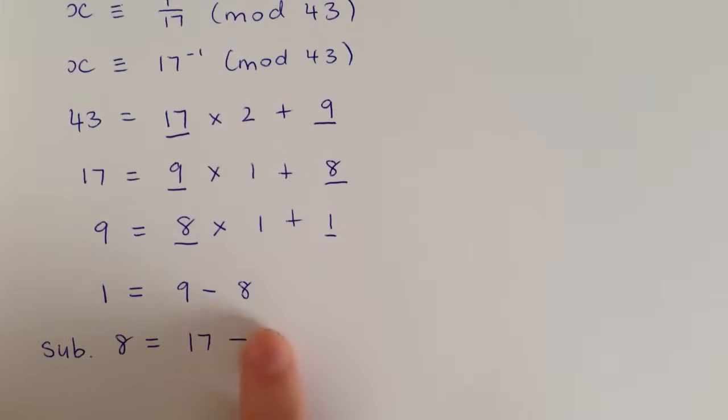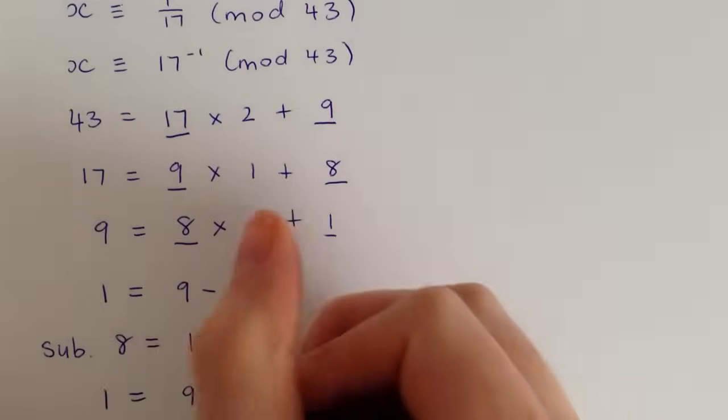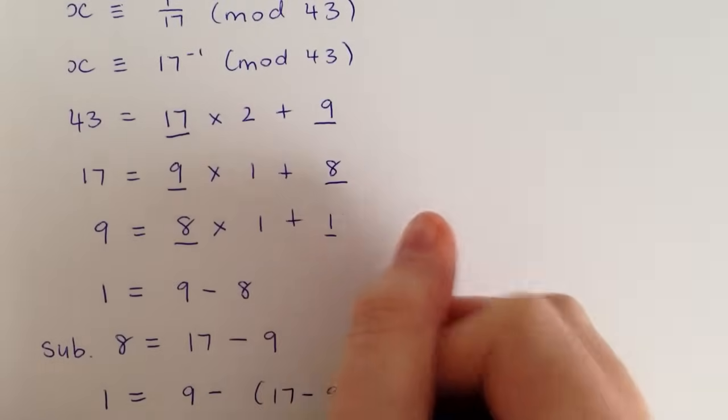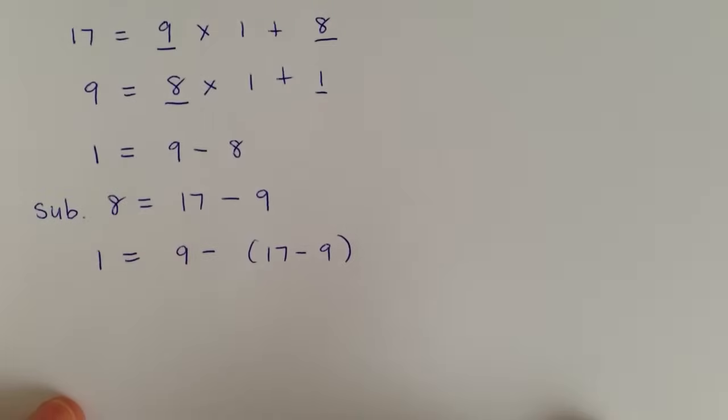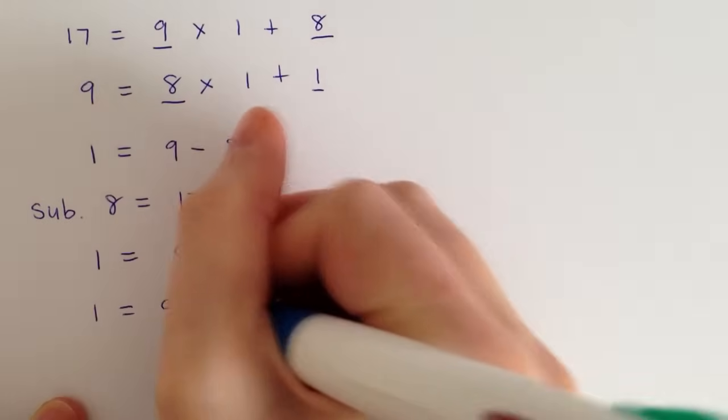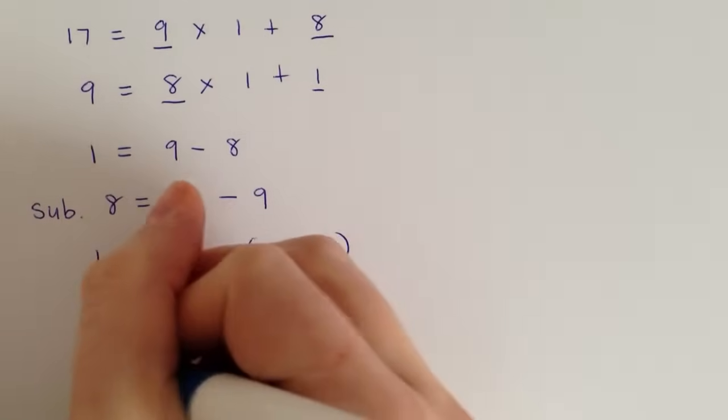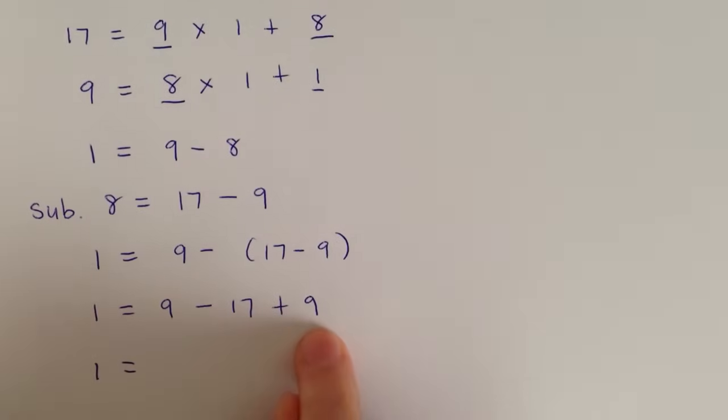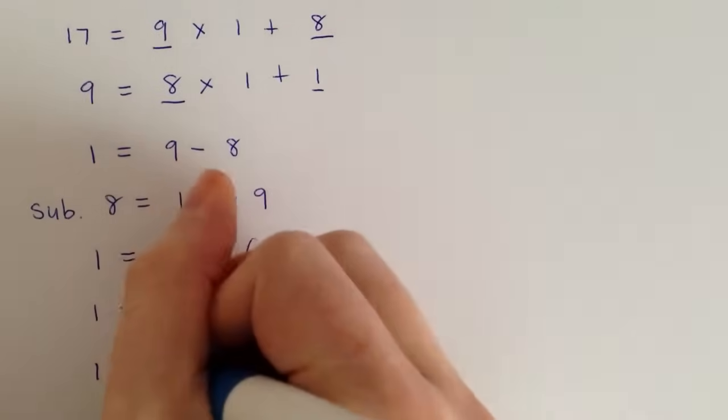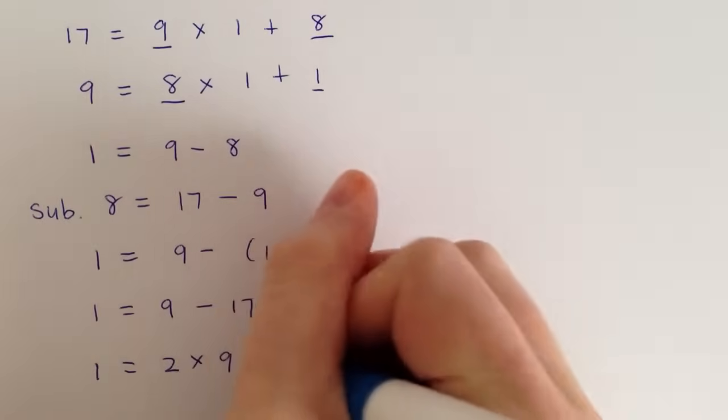So we want to sub this equation into this one just above it. So we'll get 1 equals 9 minus, where there's an 8, you want to put this 17 minus 9. Then we can just simplify that. Negative and a negative make a positive. We can simplify that one again. We've got a 9 and a 9, so that makes 2 times 9, and then minus 17.